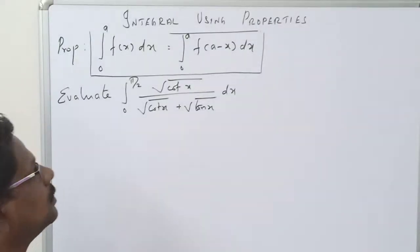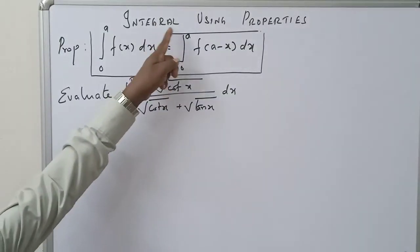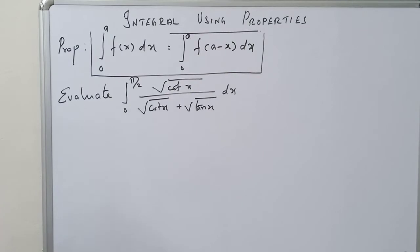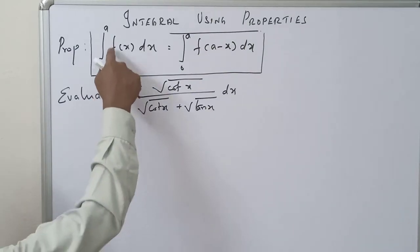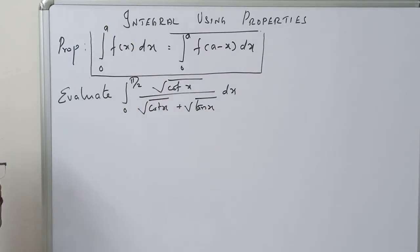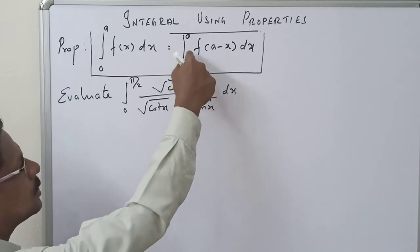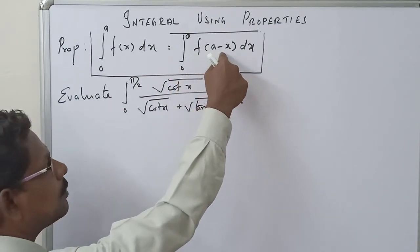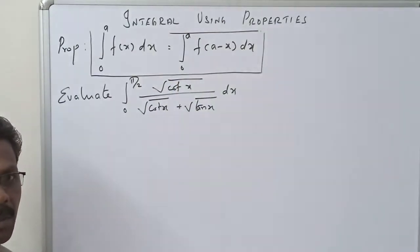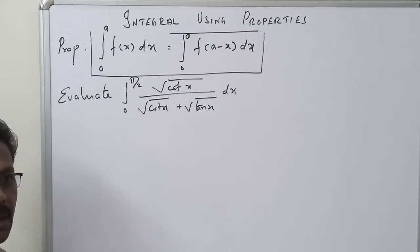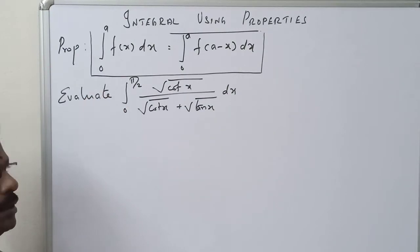Good morning students! Today we will evaluate an integral using properties — specifically, one property: the integral from 0 to a of f(x) dx equals the integral from 0 to a of f(a minus x) dx. Using this property, we can evaluate this question.